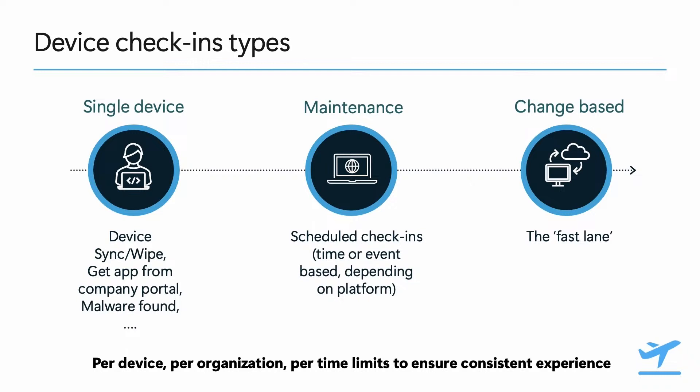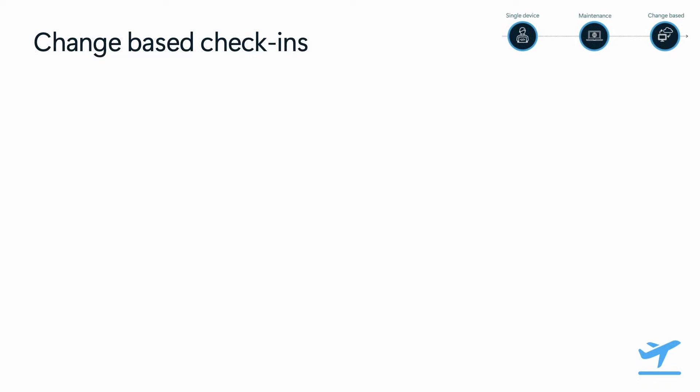Then we have maintenance check-ins, which usually happen behind the scenes and can be either client or service initiated depending on the platform. And last, there are the change-based check-ins — those are what I call the fast lane. It's important to know that no matter what the check-in type, there are per-device, per-organization, time-based quotas on the number of check-ins in order to deliver a consistently good experience to all Intune customers.